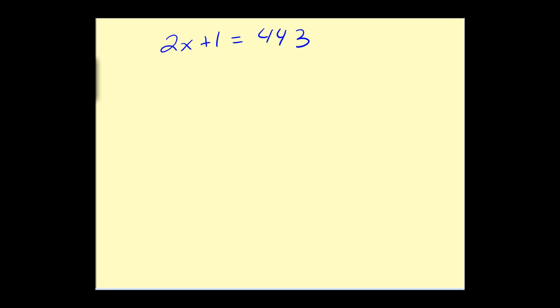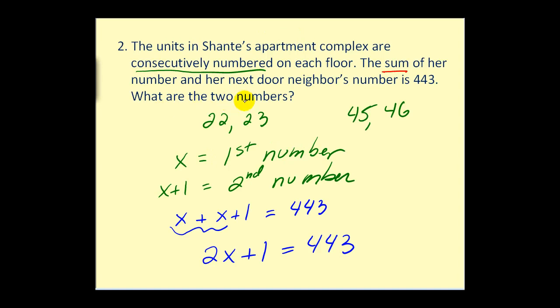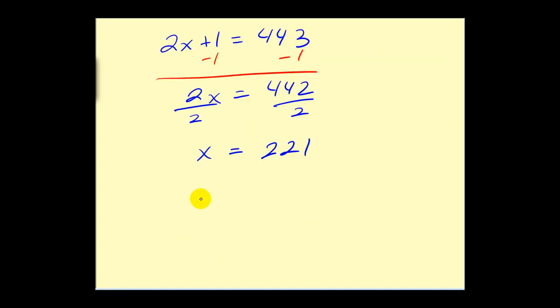Now we have our basic two-step equation. So we will subtract 1 on both sides. Divide by 2. We have x is equal to 221. Now be careful. Let's go back and read the question again. What are the numbers? So we found x, so we found the first number. But the second number was x plus 1. So the numbers would be 221, and the next one would be x plus 1 or 222. So those are the numbers we're looking for in this question.